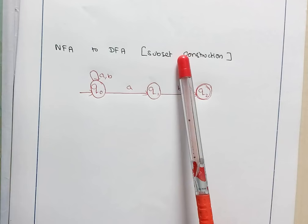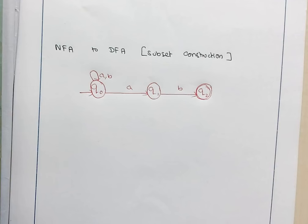DFA is one where from each and every state on each and every input symbol, we exactly have one transition. So now we are going to convert this NFA to DFA.